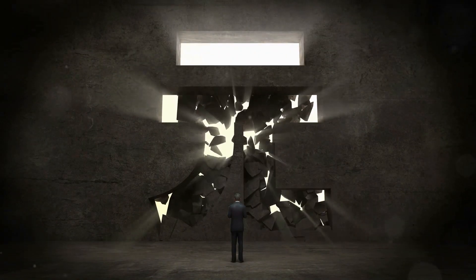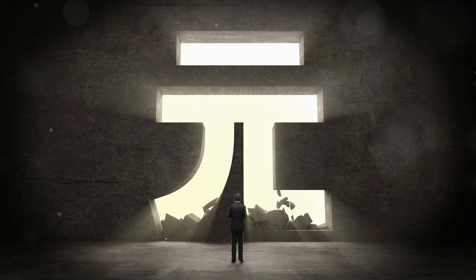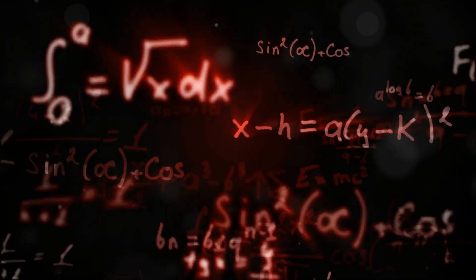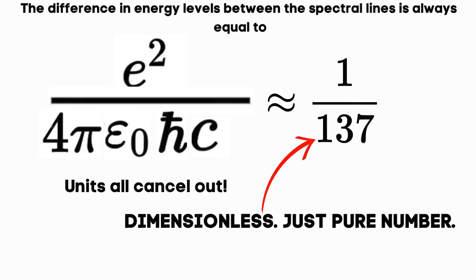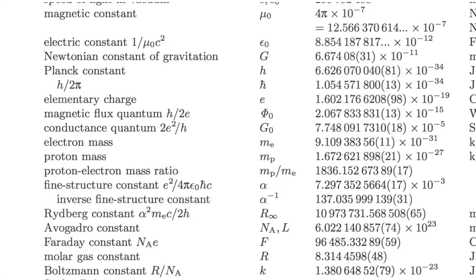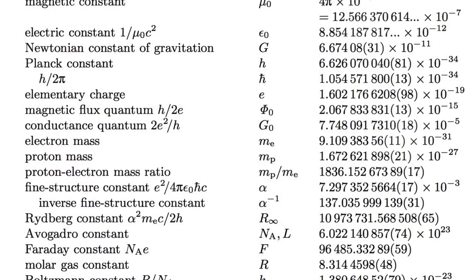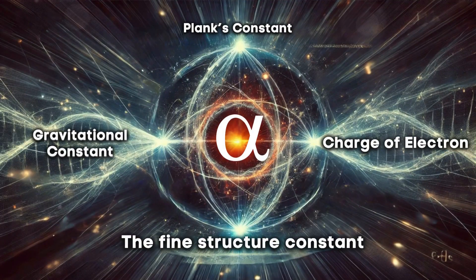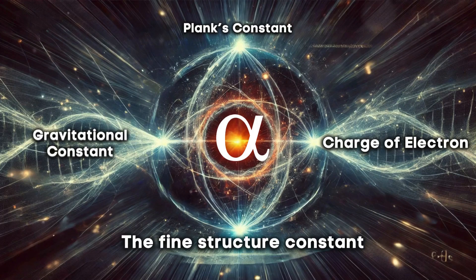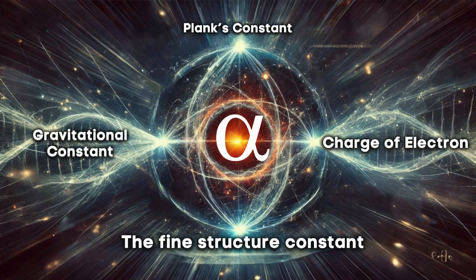But perhaps alpha is not just a physical constant, but a mathematical one like pi, a number that expresses a fundamental relationship in mathematics. Without any units, it's challenging to discern what kind of relationship alpha represents. If the other constants of nature define relationships between physical quantities, perhaps alpha represents a relationship between those fundamental relationships, tying together the fundamental constants of the universe in a way we don't yet fully understand.